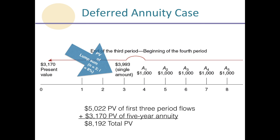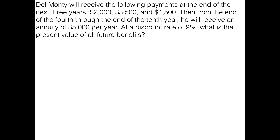Now I'd like for you to try one. Del Monte will receive the following payments at the end of the next three years: two thousand, thirty-five hundred, and forty-five hundred. Then from the end of the fourth through the end of the tenth year he will receive an annuity of five thousand dollars per year. At a discount rate of nine percent, what is the present value of all future benefits? Press pause now, figure out the answer, then we'll come back and look at it together.